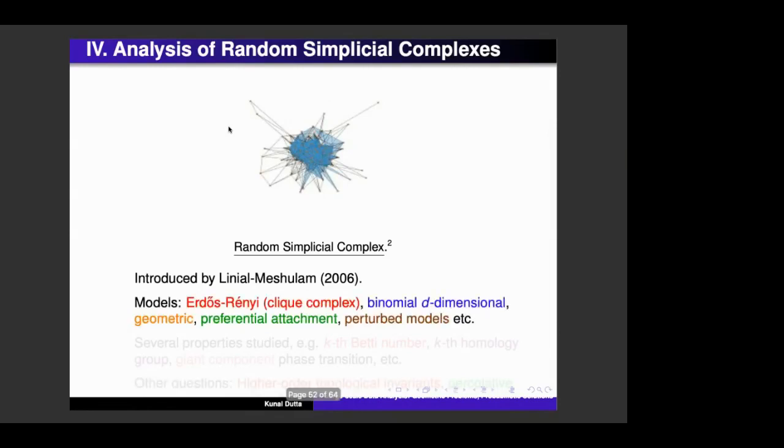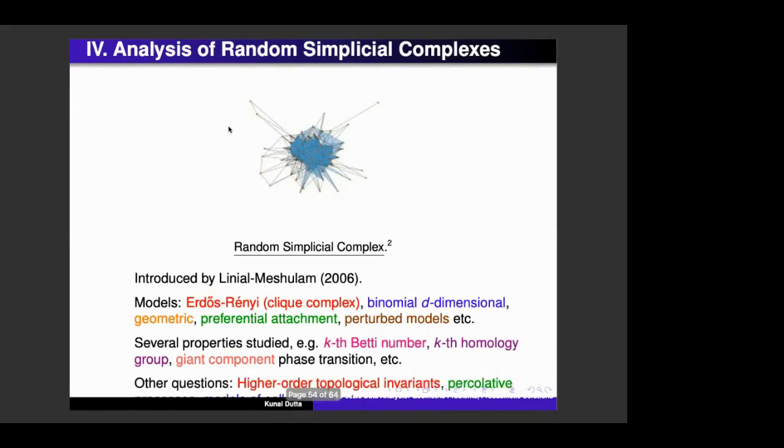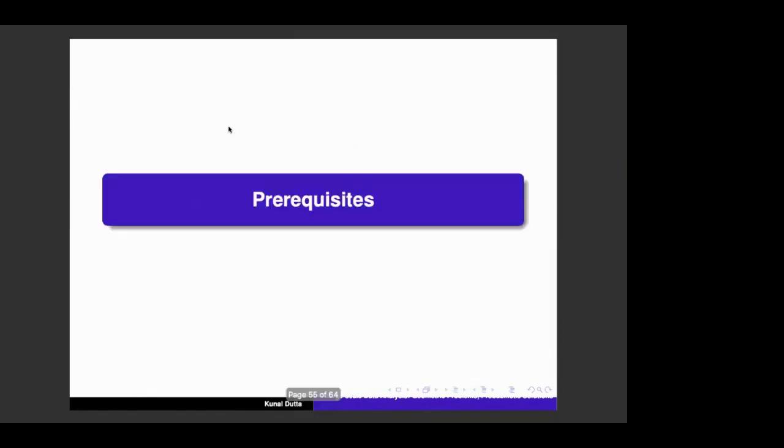So here is where we want to understand random simplicial complexes, so there are several different models. The first one was introduced by Linial and Meshulam, and there are several other models, either combinatorial or geometric, and we want to study topological properties of these models. And there are a few more higher order topological questions that are still open.